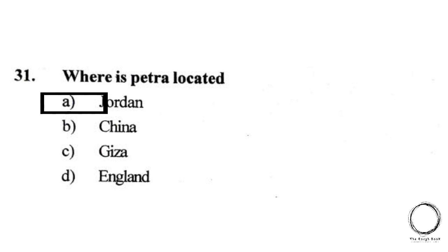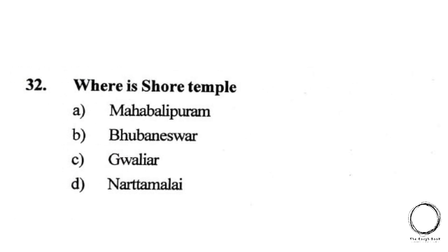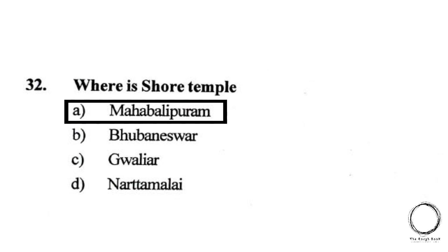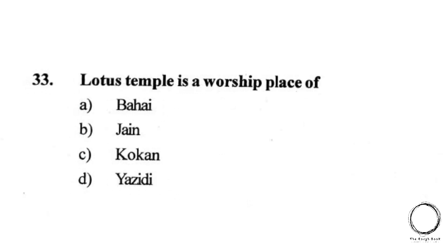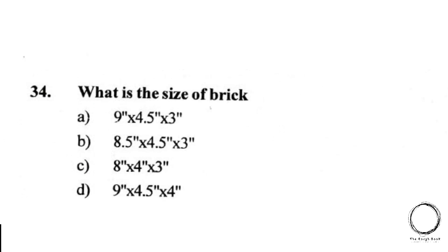Moving on: where is Petra located? Options: A) Jordan, B) China, C) Giza, D) England. The right answer is A, Jordan. Next: where is Shore Temple located? Options: A) Mahabalipuram, B) Bhubaneswar, C) Gwalior, D) Nartamalai. The right answer is A, Mahabalipuram. Next: Lotus Temple is a place of worship for which faith? A) Bahai, B) Jain, C) Konkan, D) Yazidi. The right answer is A, Bahai.